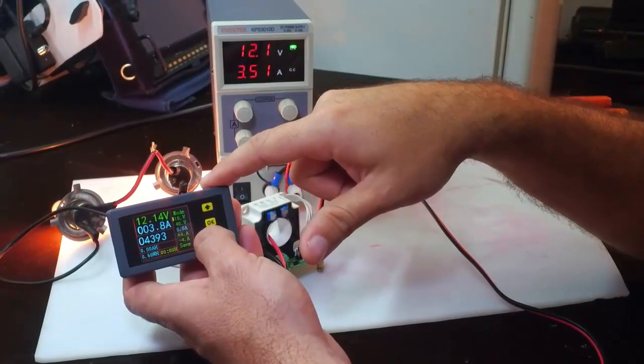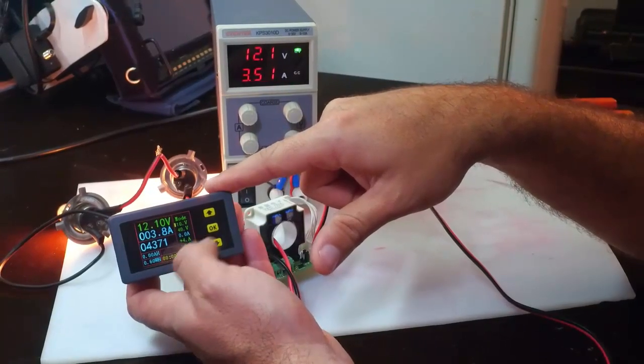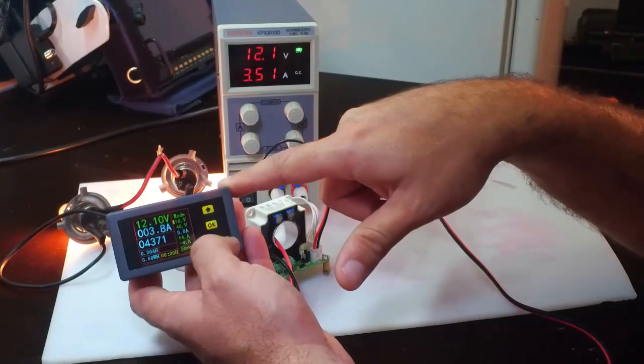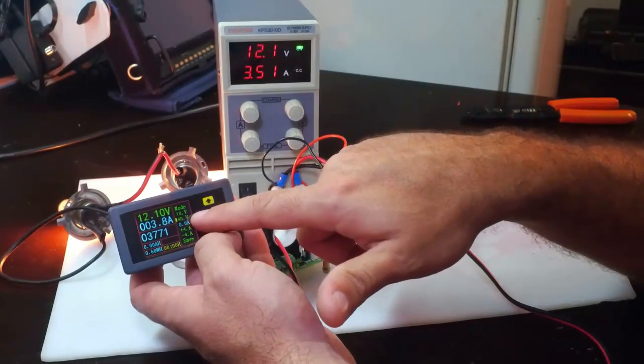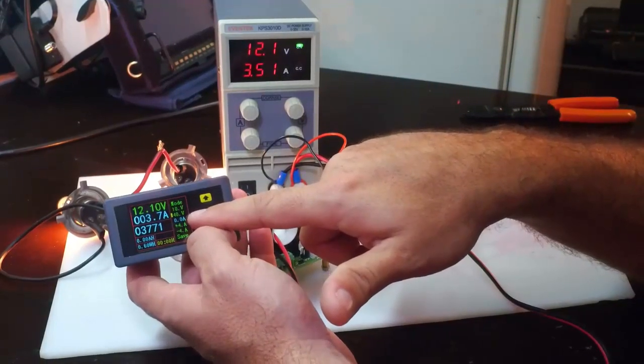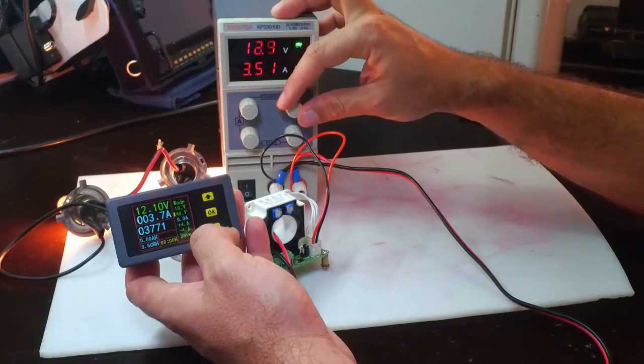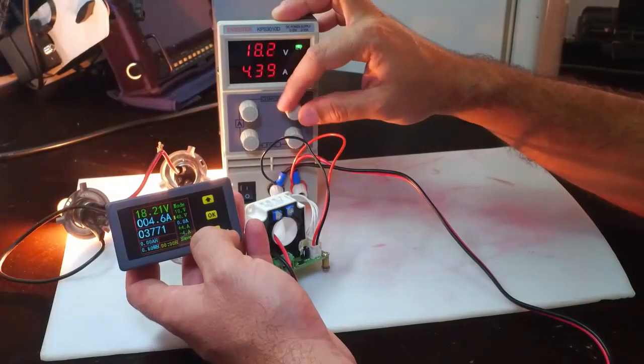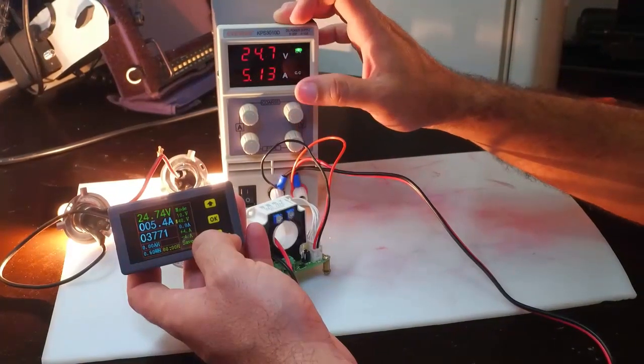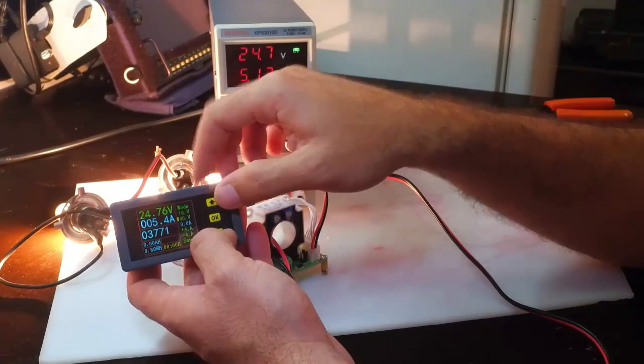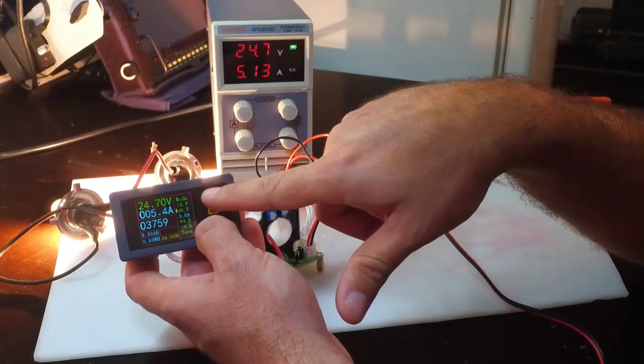After that, we press again the key button and put the cursor at 40 volts in the menu, as you can see. After that, we're going to increase the voltage in our DC power source to 24 volts approximately, and then we adjust here. It's calibrated, but we can adjust here more or less until we get the same result as our voltmeter.